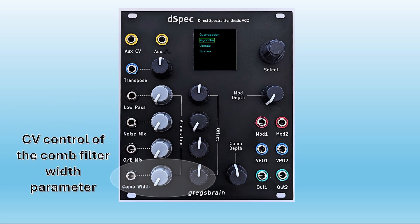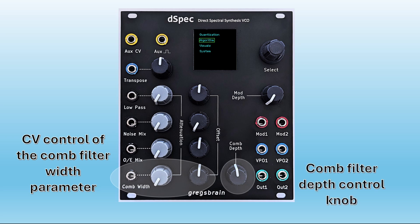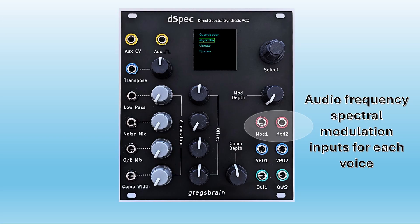In addition to the low-pass filter, there's a comb filter with CV control over the comb width and a knob for setting the comb depth. There are also two audio frequency modulation inputs, one for each of the two voices. The spectrum of the inputs modulates the spectrum of the outputs, creating all sorts of interesting effects.